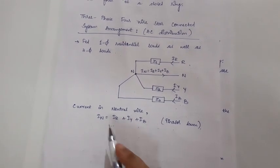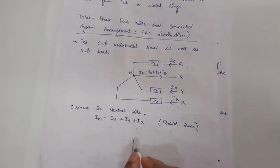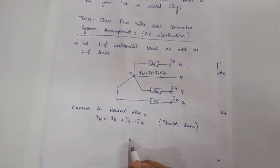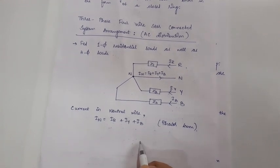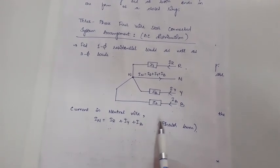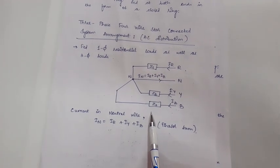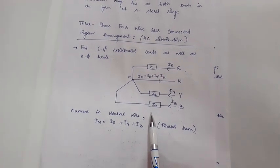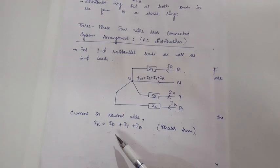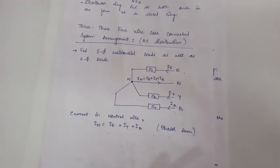Today we have discussed about the distribution system: the AC and DC distribution systems based on type of current, the types of DC distribution system, how the AC distribution system is comprised, as well as the different types of interconnected system based on the scheme of connection. Thank you.